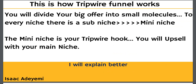What I mean is this: you divide your big offer into smaller parts. To every niche there is a sub-niche, and to every sub-niche there is a mini-niche. For example, if you are a website designer, your main niche is website design, the sub-niche is landing pages, and the mini-niche is form pages. Your mini-niche is your tripwire hook. Instead of creating an offer on website design — where you'd have to charge a large amount that prospects without enough reviews or authority might not accept — you start smaller.